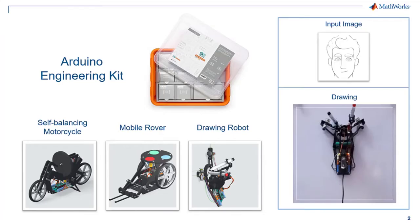The Arduino engineering kit is an initiative by MathWorks and Arduino which provides hands-on experience in building three engineering projects: self-balancing motorcycle, mobile rover, and the drawing robot. Through these projects one gets to learn about MATLAB, Simulink, and Arduino.